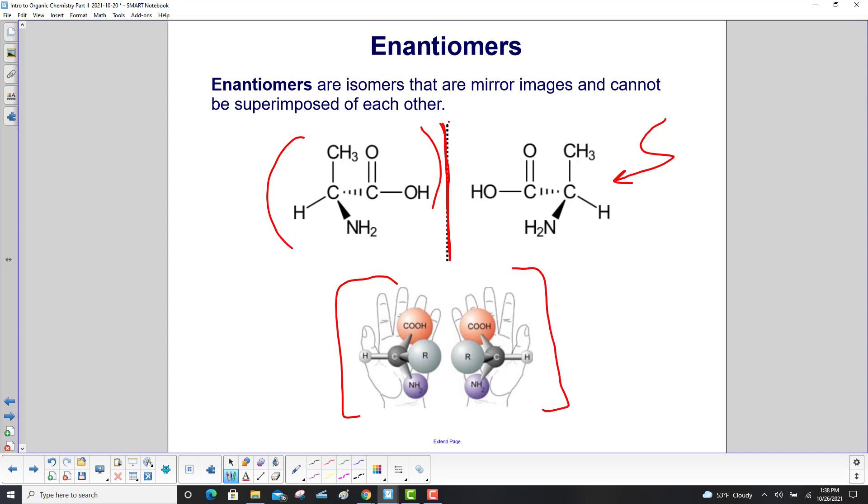If you put your left and right hand one on top of the other, both palms facing up, you'll see the thumb is on the right side on one of them and the left side on the other side. So same thing true for the enantiomers.